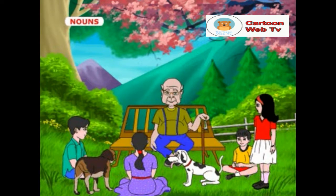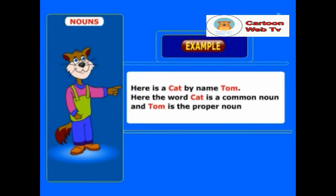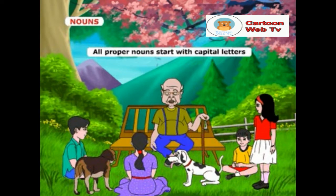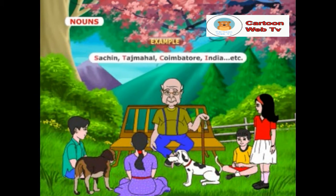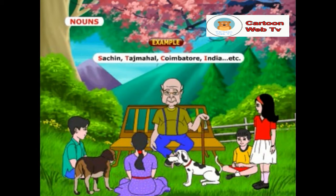Nivia, can you give another example? Yes, Grandpa. Look at this example: 'Here is a cat by name Tom.' Here, the word cat is a common noun and Tom is the proper noun. Also, children, remember, all proper nouns start with capital letters. Examples are: Sachin, Taj Mahal, Coimbatore, India, etc.